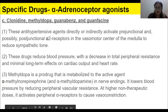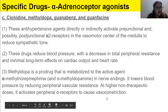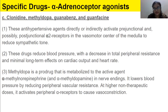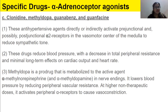Clonidine, methyldopa, guanabenz, and guanfacine are antihypertensive agents that directly or indirectly activate pre-junctional and possibly post-junctional alpha-2 receptors in the vasomotor center of the medulla to reduce sympathetic tone.